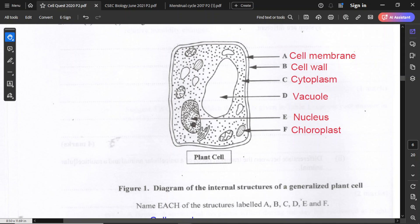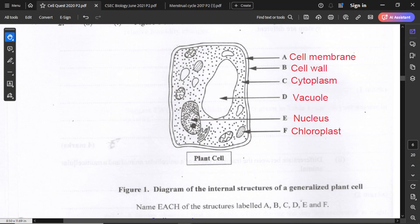Based on the diagram, we have A being cell membrane, B being cell wall, C being cytoplasm, D is the vacuole, E is the nucleus, and F is the chloroplast.